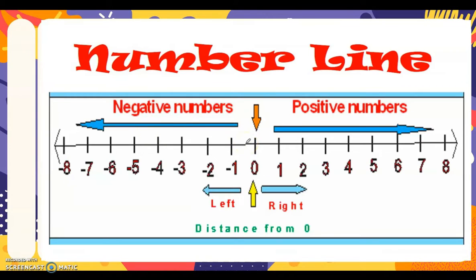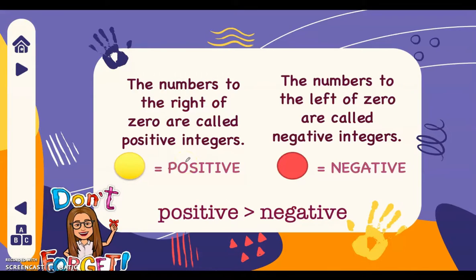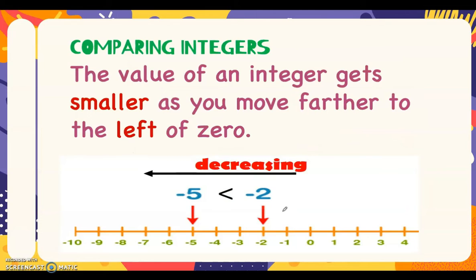Zero is neither positive nor negative. Since this is a number line, it could extend in both sides infinitely. The numbers to the right of zero are called positive integers and the numbers to the left of zero are called negative integers. We could also visualize integers using circles or colored chips — yellow circles for positive integers and red circles for negative integers.